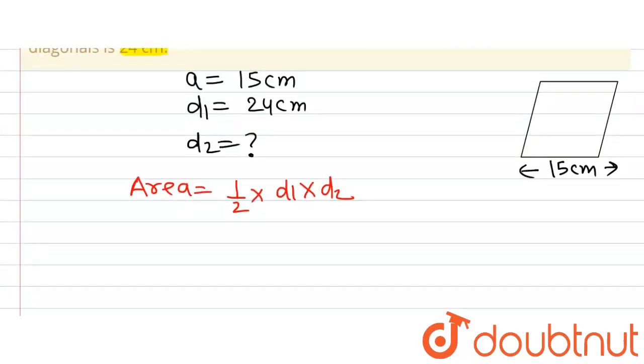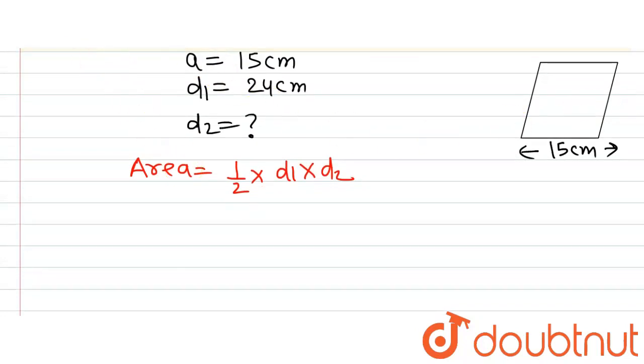Now we are going to use the formula. There is a relationship between the side of the rhombus that is A and the diagonals D1 and D2, and that relationship is A equals half times the square root of D1 squared plus D2 squared.